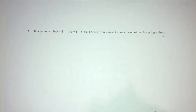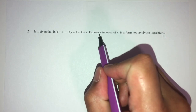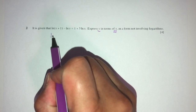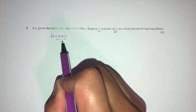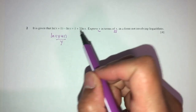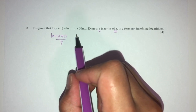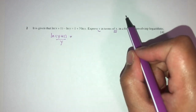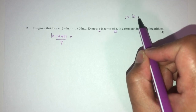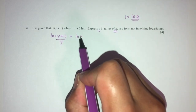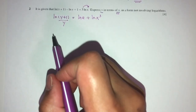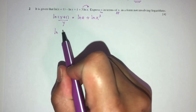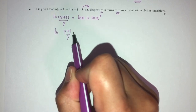Now let's move on to question number 2. We have to express y in terms of x. One by one, let's simplify. You will have ln((y + 1) / y). Now, we need to know that 1 = ln(e). So we rewrite the right-hand side as ln(e) + ln(x³). Combined, you will have ln of y plus 1 over y equal to ln(ex³).